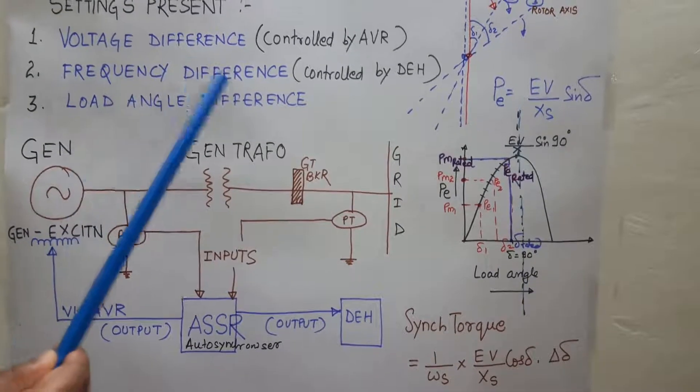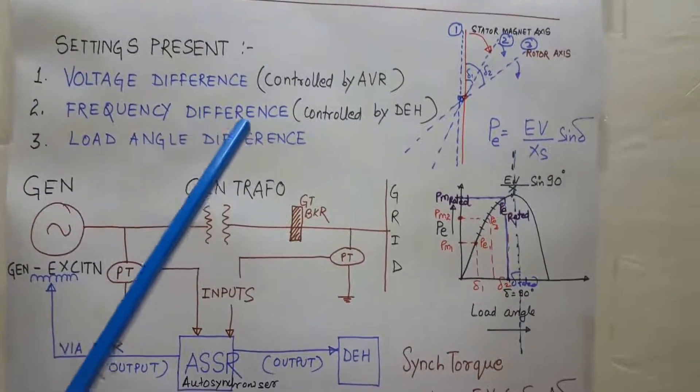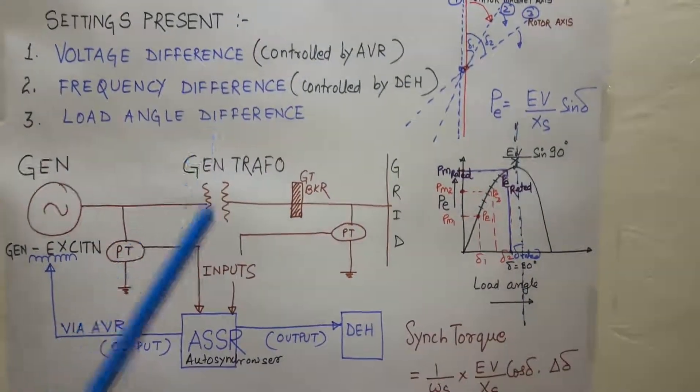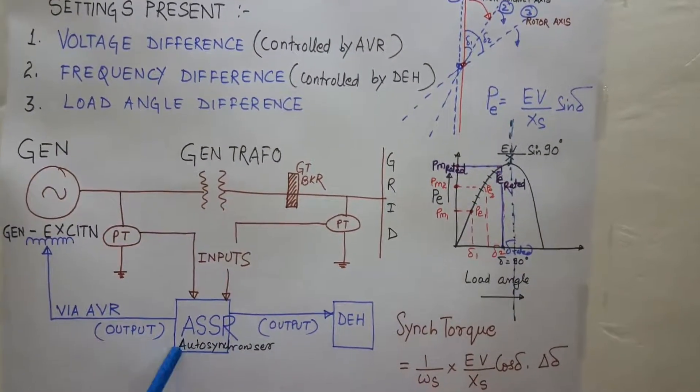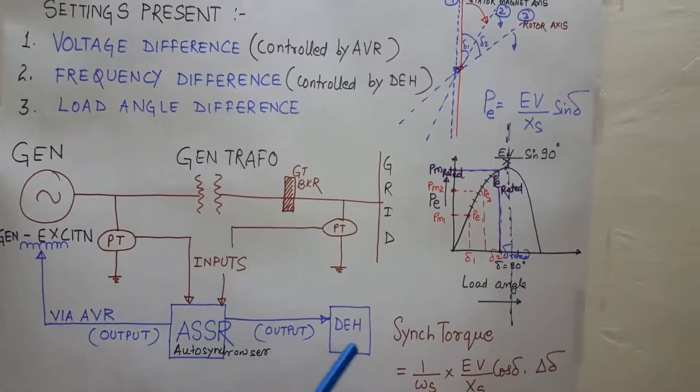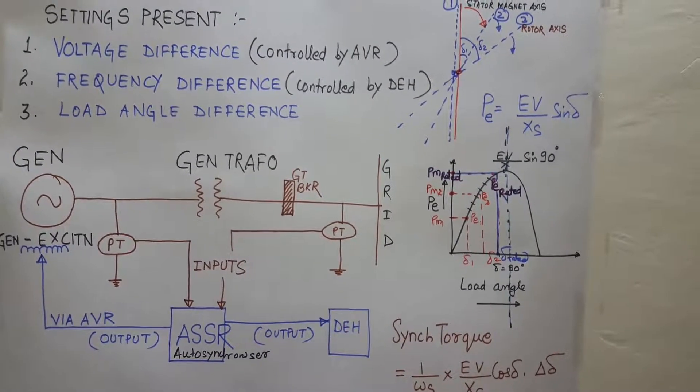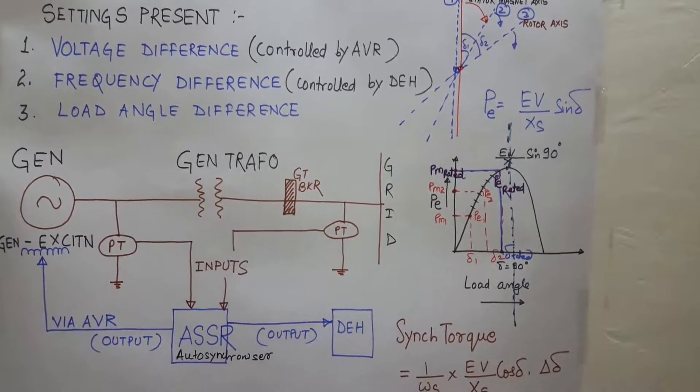And suppose if the frequency difference is outside the tolerance limit of the setting in auto synchronizer, then this auto synchronizer will send an output signal to the DEH of the turbine in order to control the speed of the rotor.